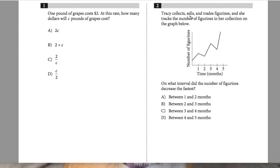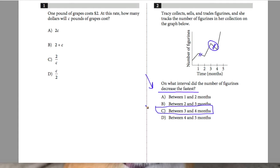Question 2 states: Tracy collects, sells, and trades figurines and she tracks the number of figurines in her collection on the graph below. Time is the X-axis, number of figurines is Y. On what interval did the number of figurines decrease the fastest? Decrease the fastest means going down on the Y-axis. Between three and four appears to be the greatest or steepest decline, so C is my best answer to number two.